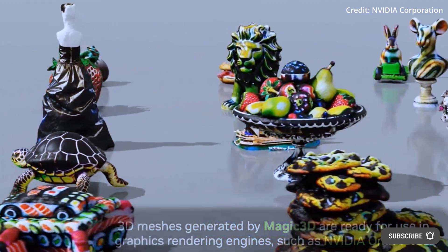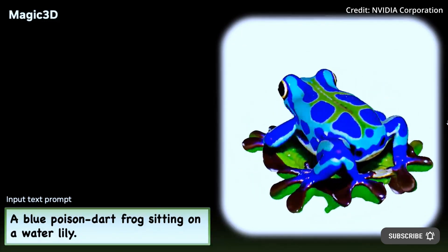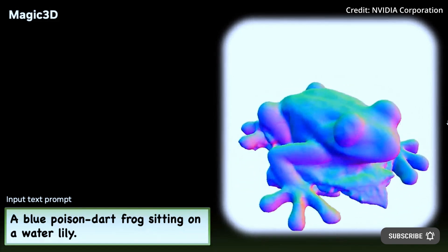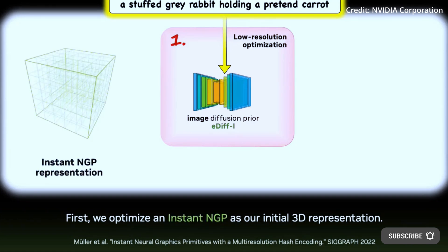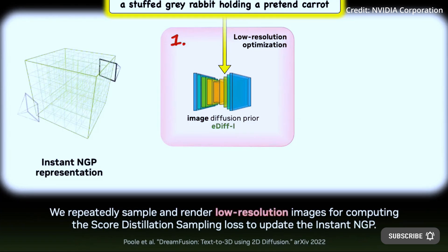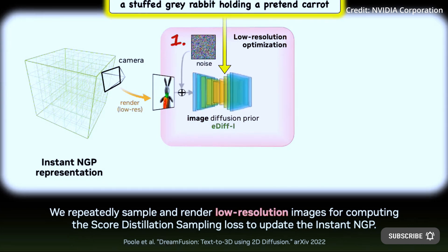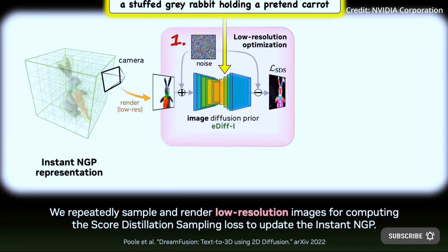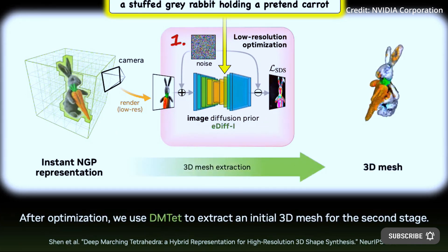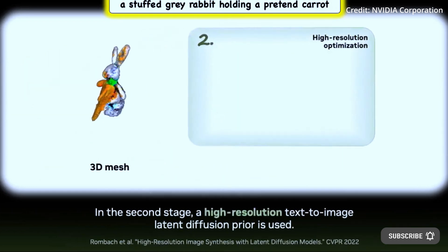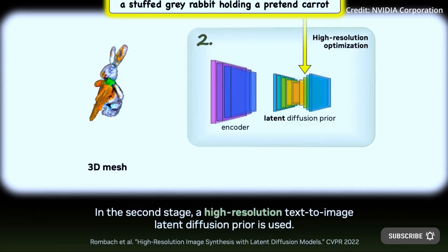NVIDIA's method uses a two-stage coarse-to-fine optimization system to produce text-to-3D objects quickly and with excellent quality. In the first step, a low-resolution diffusion prior produces a coarse model, which is then accelerated using a hash grid and sparse acceleration structure. In the second step, a textured mesh model is initialized from the coarse neural representation to enable optimization using a high-resolution latent diffusion model in conjunction with an effective differentiable renderer.